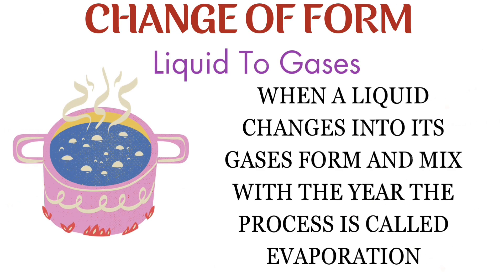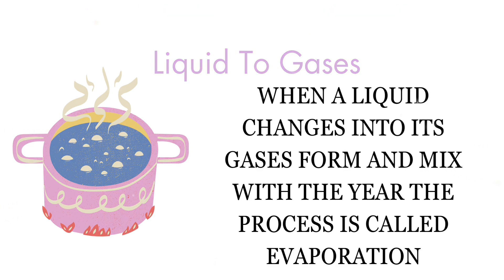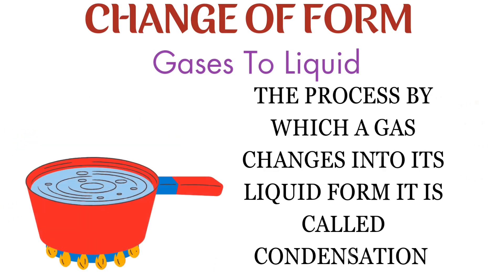Now, liquid to gas. How does a liquid change to a gas? When a liquid changes into its gaseous form and mixes with the air, the process is called evaporation. For example, water changes into water vapor on boiling. The process of change from liquid to gas is known as evaporation.